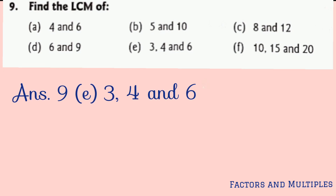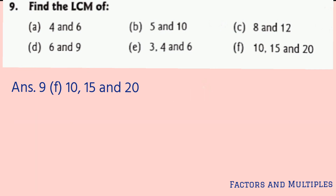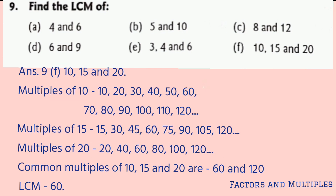Part e: 3, 4, and 6. Here 3 numbers are given. We write their multiples, find common multiples, and identify the least. After writing the multiples of 3, 4, and 6, we get 12 and 24 as the first 2 common multiples, out of which 12 is the LCM.